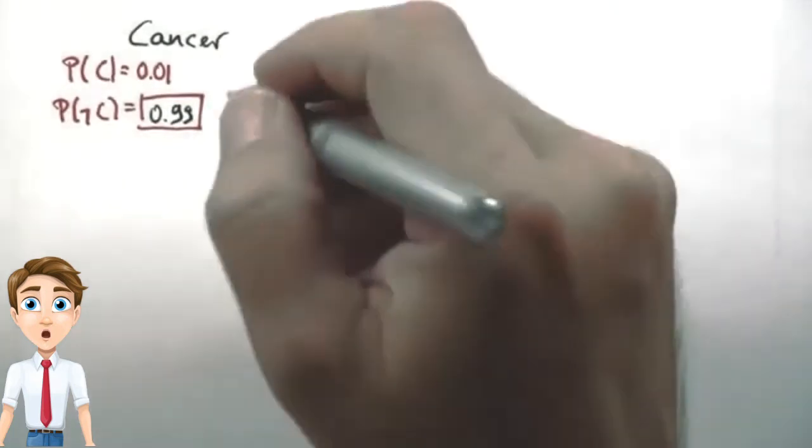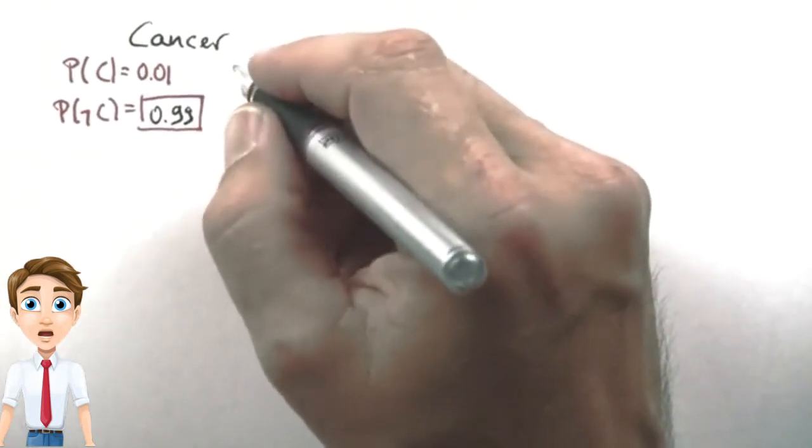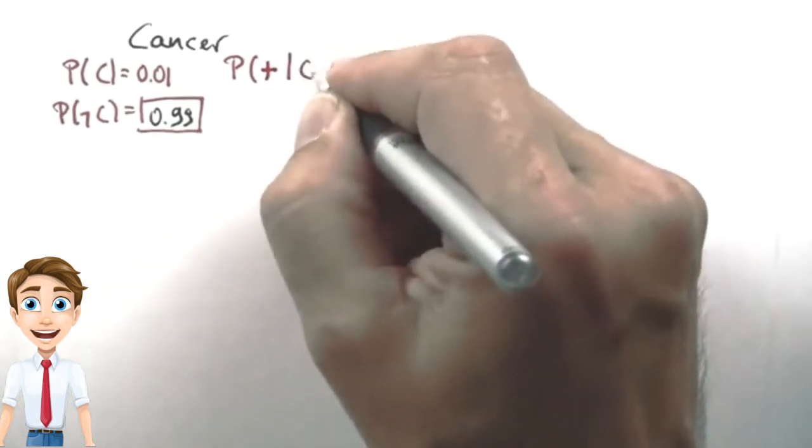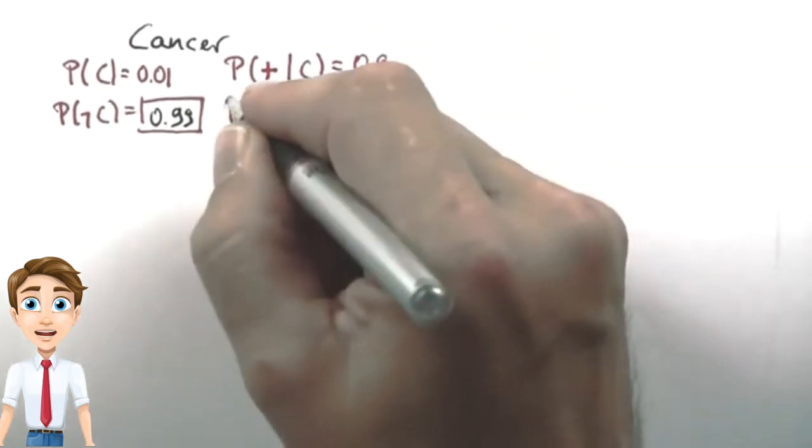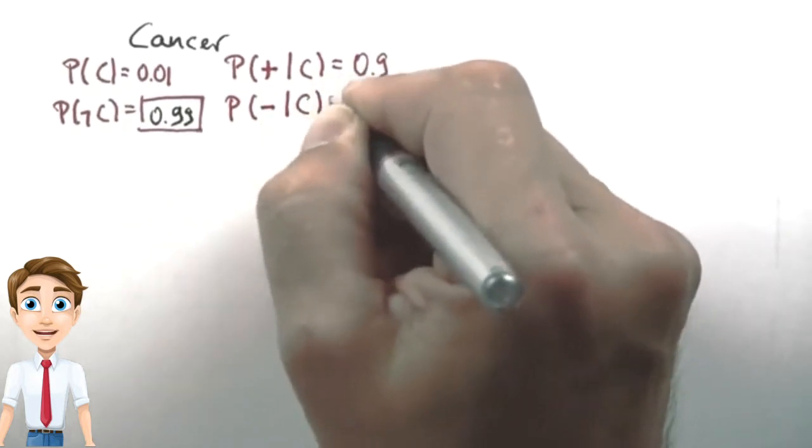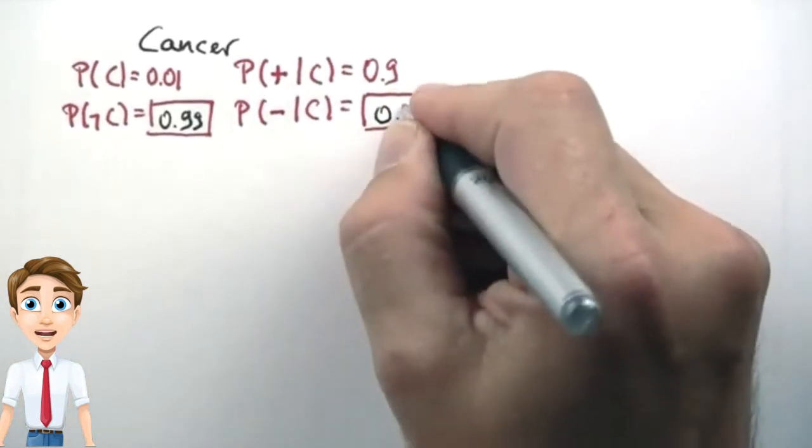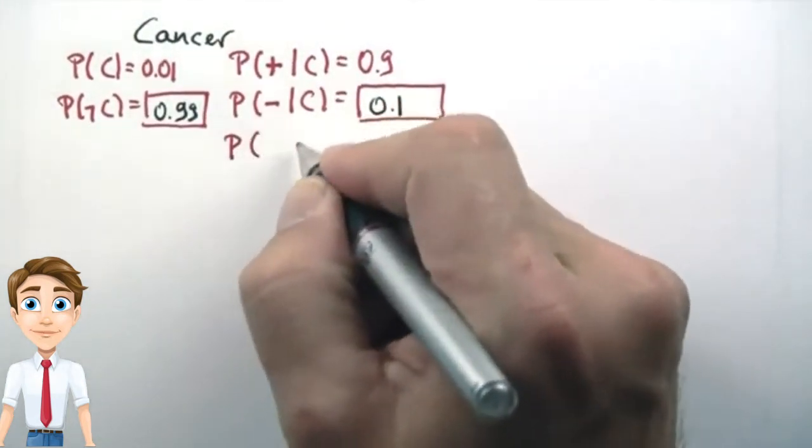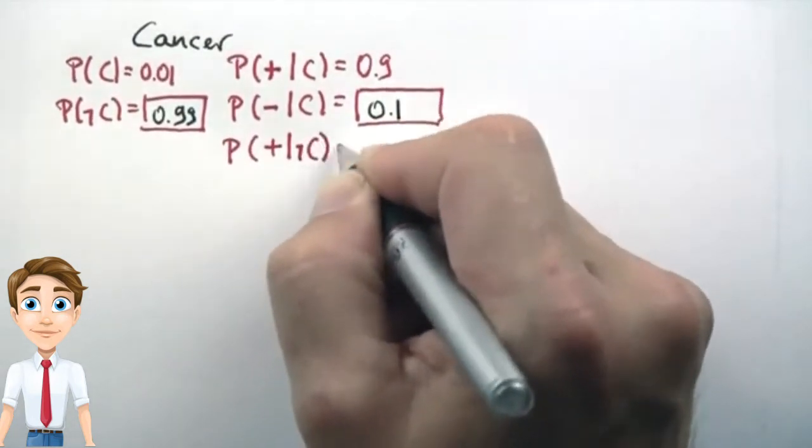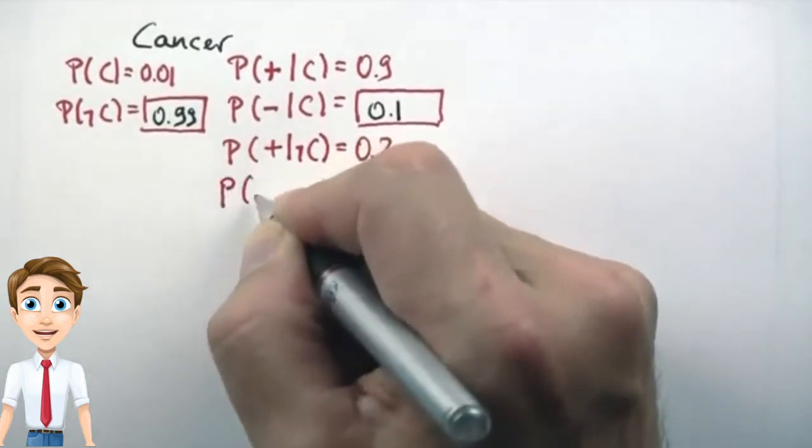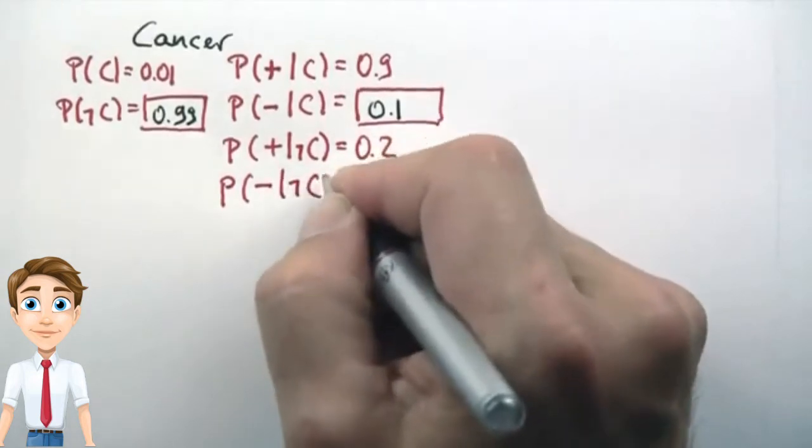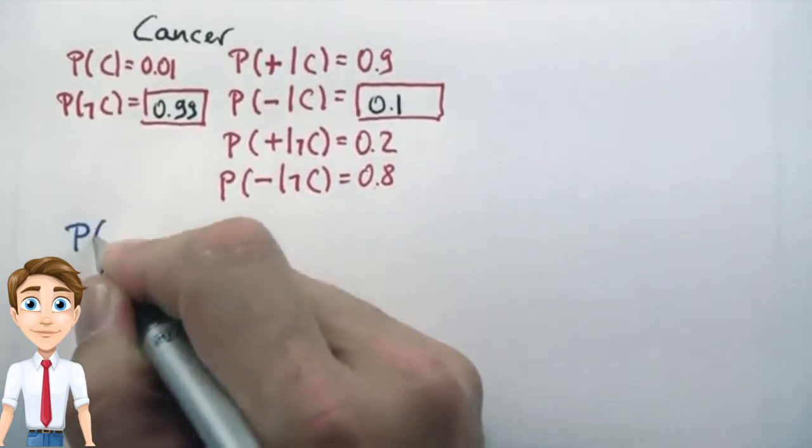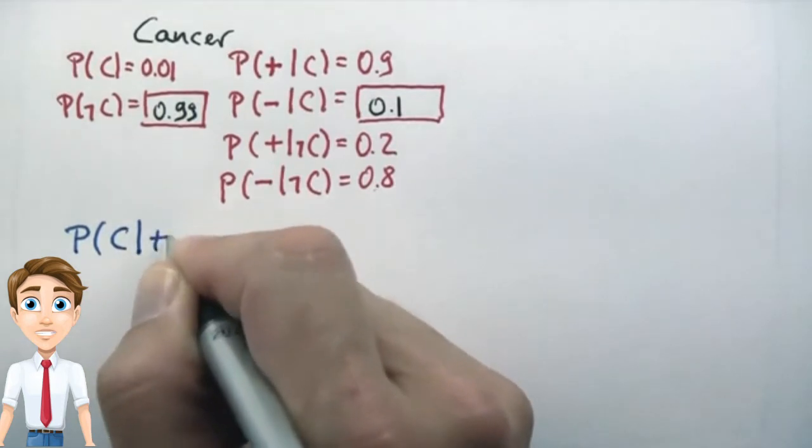Let's assume there's a test for this cancer which gives us probabilistically an answer whether we have this cancer or not. The probability of a test being positive, given that we have cancer, is 0.9. The probability of the test coming out negative if we have the cancer is 0.1. The probability of the test coming out positive given that we don't have this cancer is 0.2. In other words, the probability of the test correctly saying we don't have the cancer if we are cancer-free is 0.8. Now, ultimately, I'd like to know what's the probability that we have this cancer even if we have just received a single positive test.